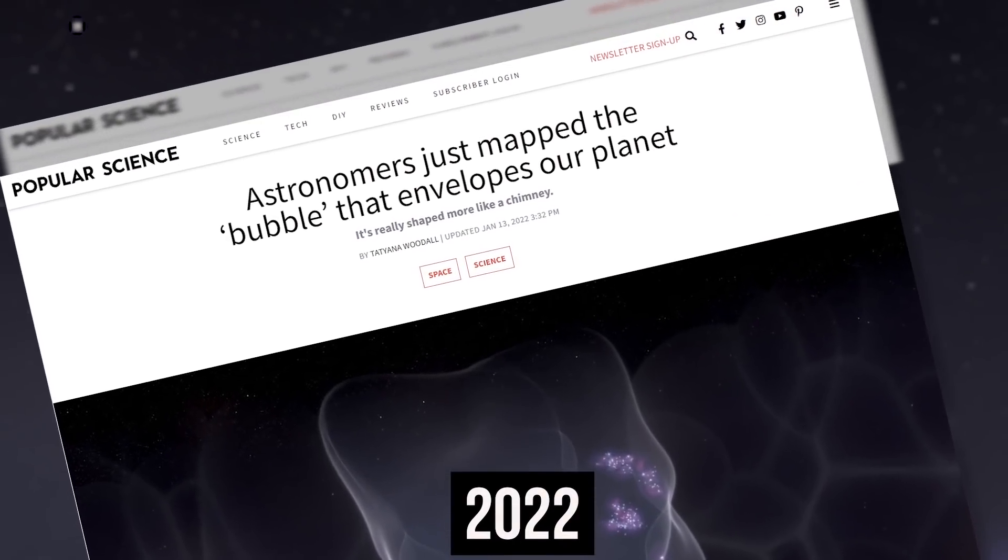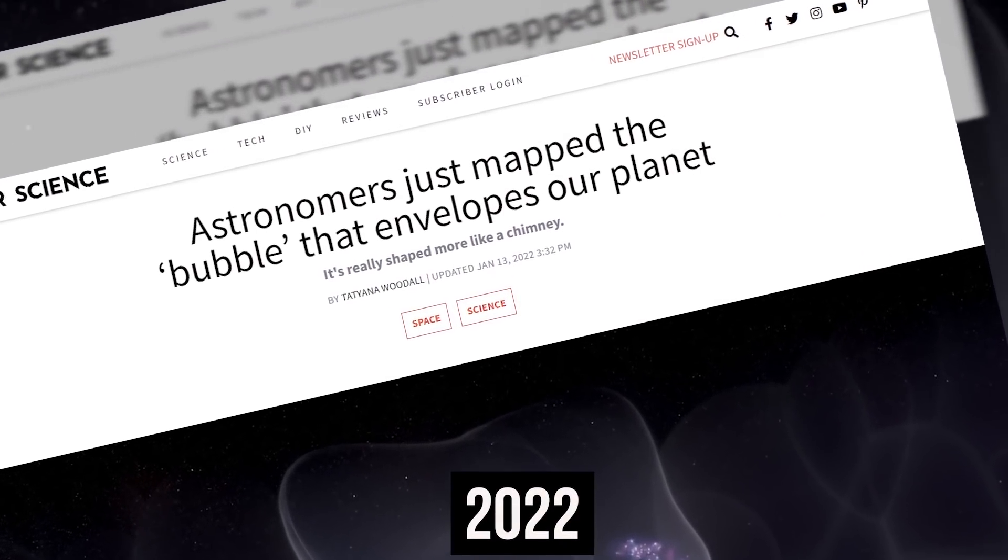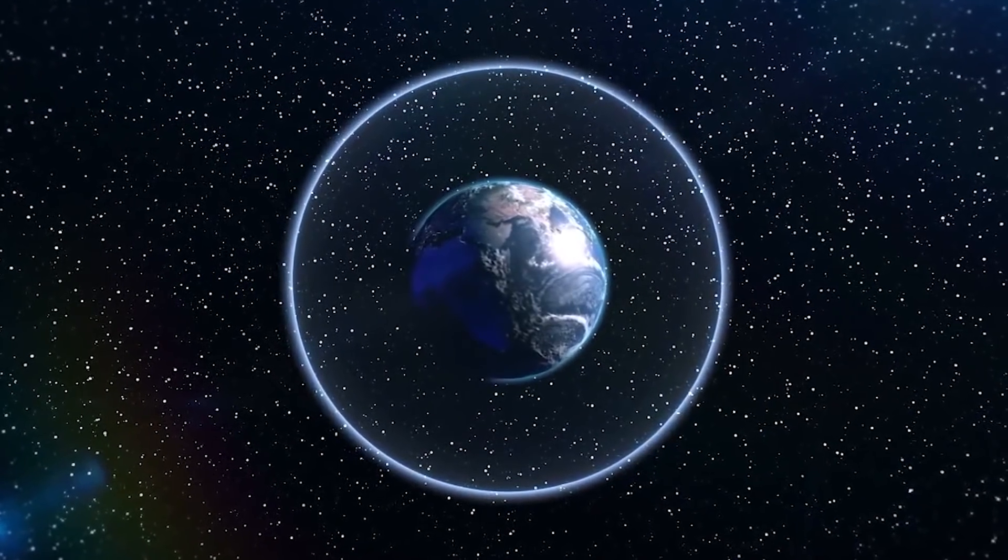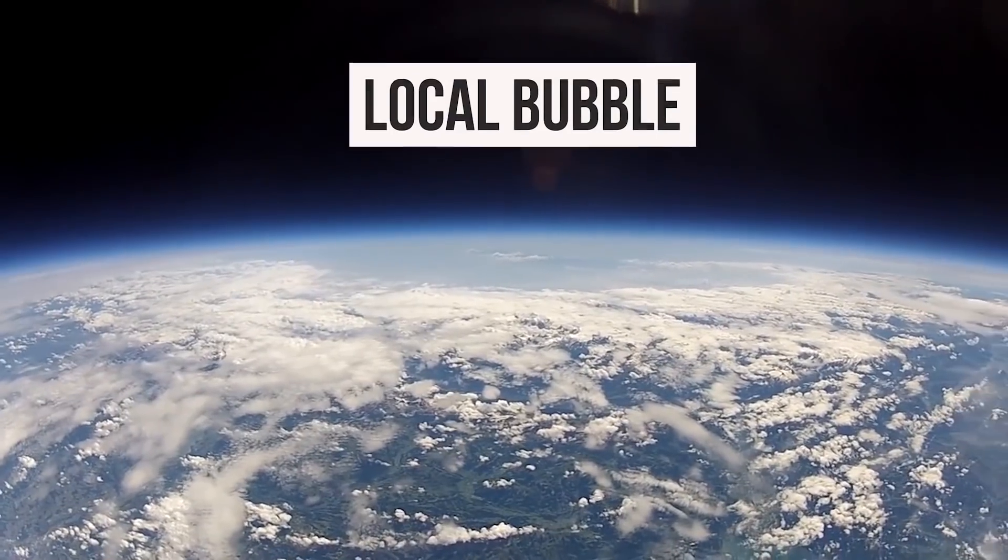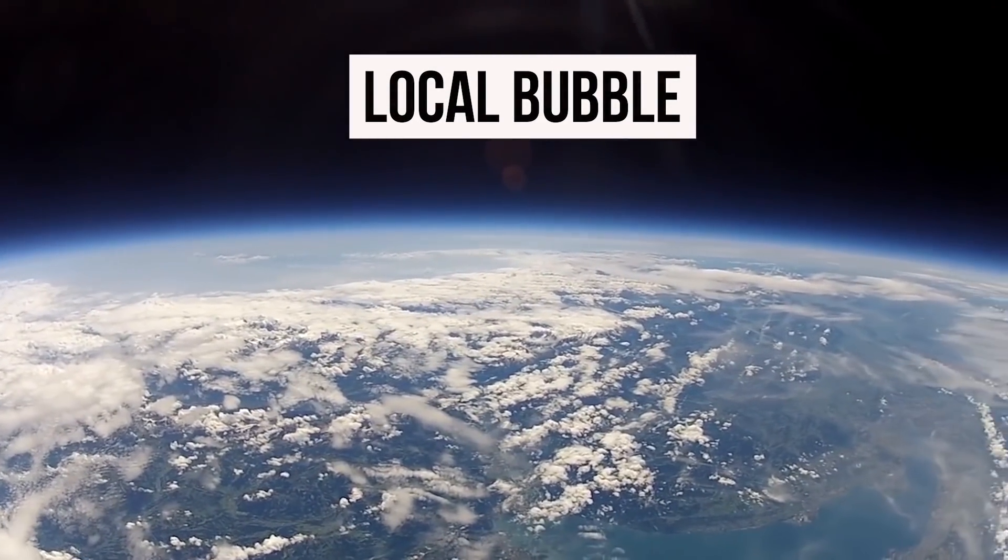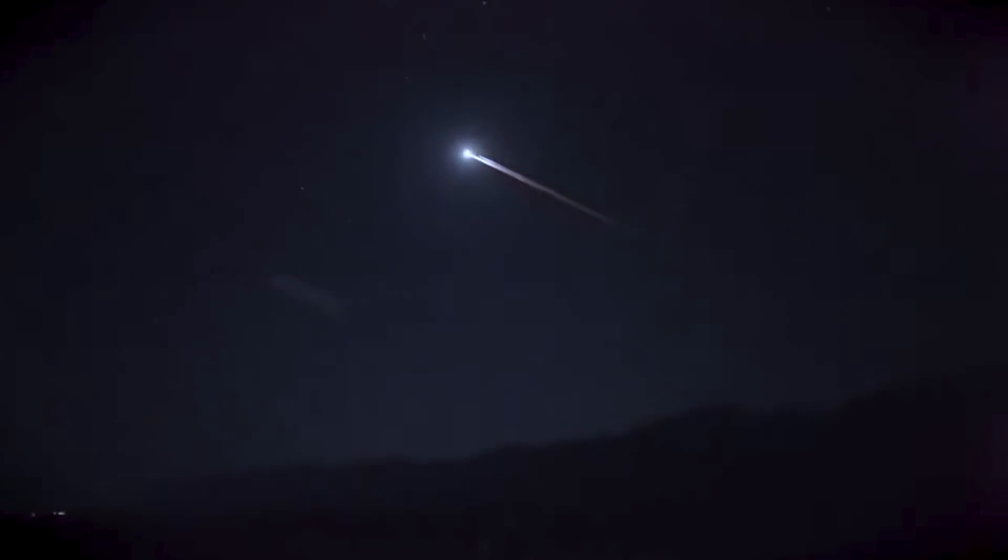In January 2022, scientists were shocked to discover that we're in the center of a huge space bubble. Together with the Sun, of course. This so-called local bubble made out of dense gas probably protects our planet from the effects of outer space. But in what way exactly?